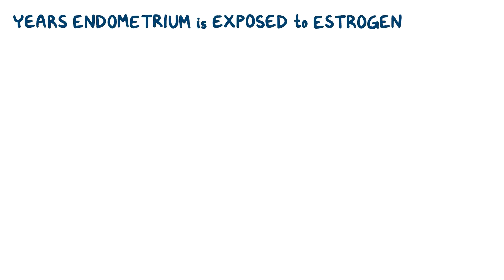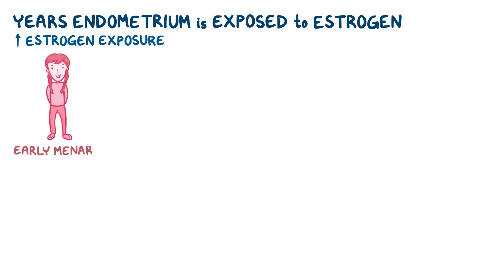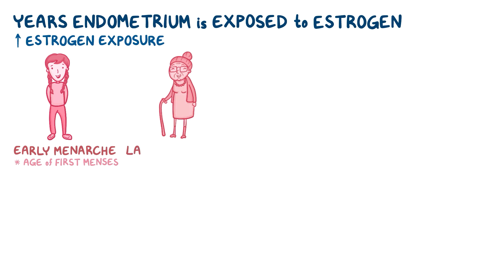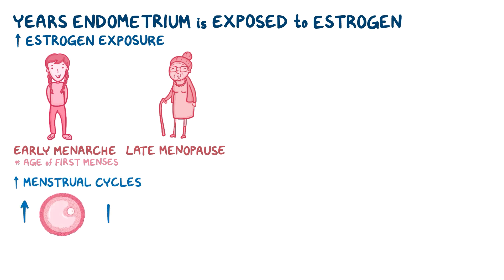A person could have normal estrogen production throughout their life, but the number of years the endometrium is exposed to estrogen is also a factor for developing endometrial hyperplasia. Estrogen exposure is increased in people who have an early menarche, which is the age of the first menses, or those that have a late menopause. This is because these people have experienced a greater number of menstrual cycles, where more follicles have grown and more estrogen was secreted by these follicles.